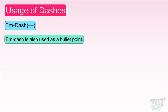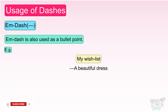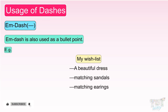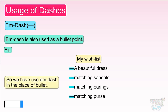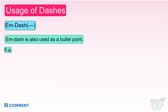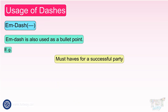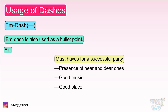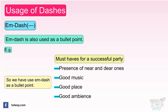Now let's learn the last usage of M dash. It can be used as a sort of bullet point. For example, 'My wish list: — A beautiful dress — Matching sandals — Matching earrings — Matching purse.' So we have used M dash in place of a bullet. Another example: 'Must haves for a successful party: — Presence of near and dear ones — Good music — Good place — Good ambience.' So we have used M dash as a bullet point.